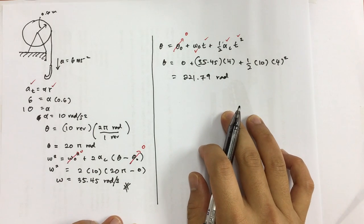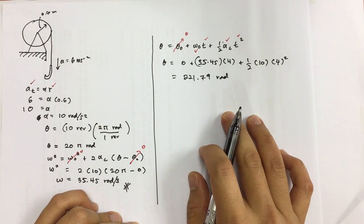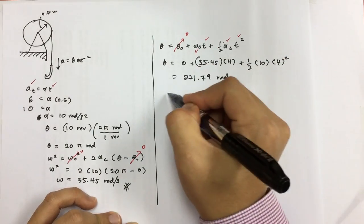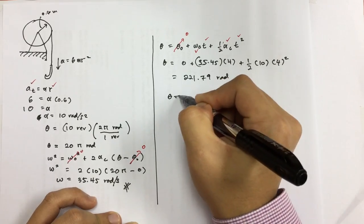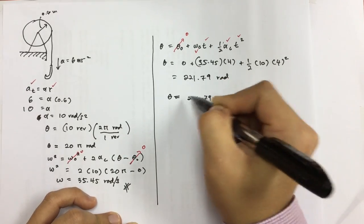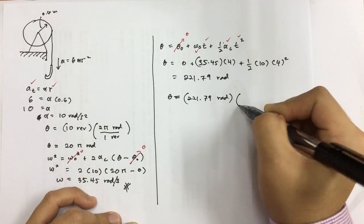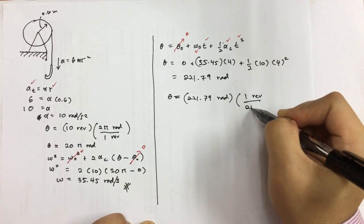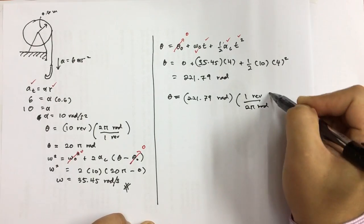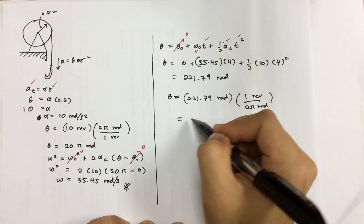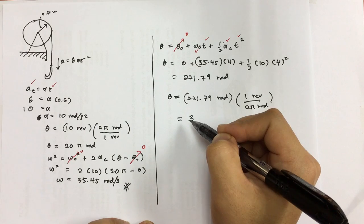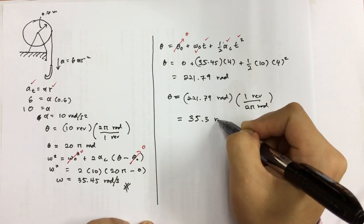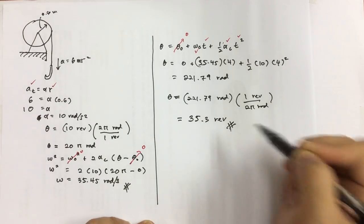The question asks for the number of revolutions, not just the angular displacement. So we convert: theta equals 221.79 radians times 1 revolution per 2π radians. This gives us the result that the drum revolves for another 35.3 revolutions. That is the final answer.